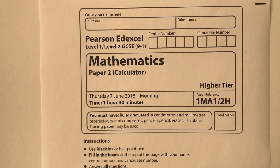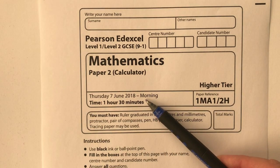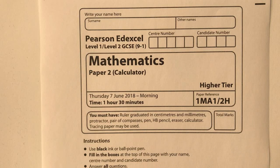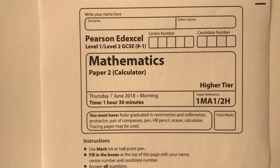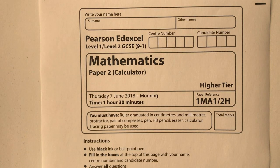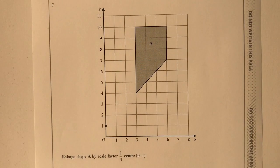Welcome to video two in the series looking at the June 2018 edXL higher paper. In the previous video we stopped at question six and we're carrying on today from question seven. Please do stop the video, have a go at each of the questions, and then compare your solutions. I'm aiming for this video to be about 20 to 30 minutes.